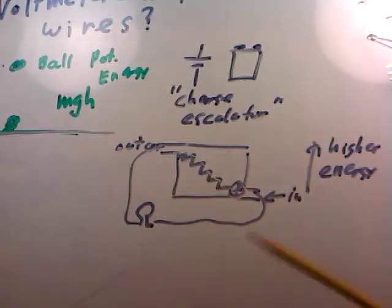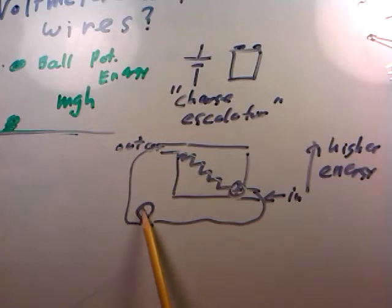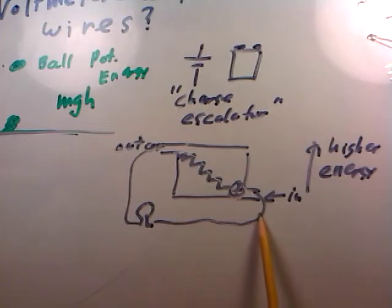So really what a battery is is a charge escalator. It gives charge energy. And once it has this energy, it can flow around a circuit. It can make light bulbs come on and cell phones ring and motors go off. But then when it gets done with the circuit, it's more or less dead. It has to go back in the battery to get lifted back up again before it can do some more work.